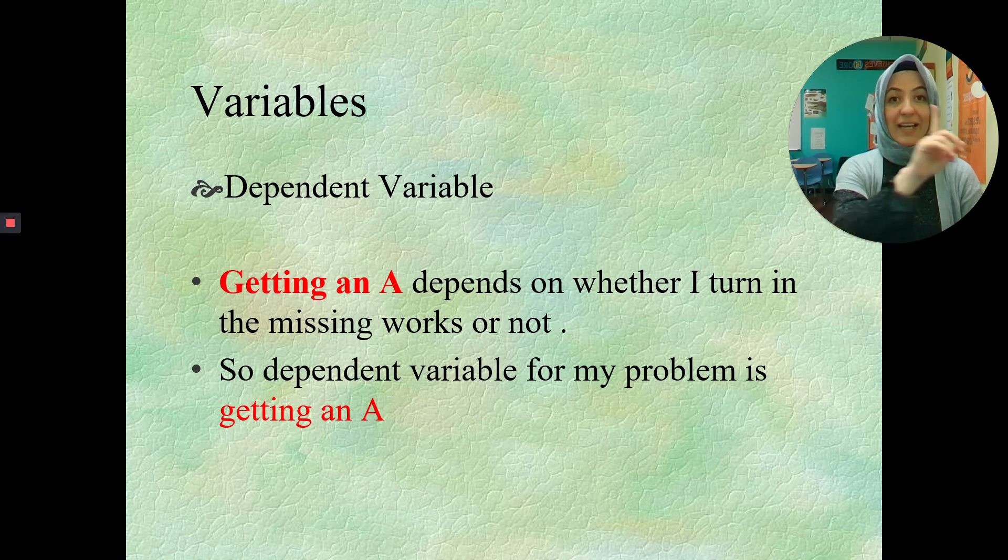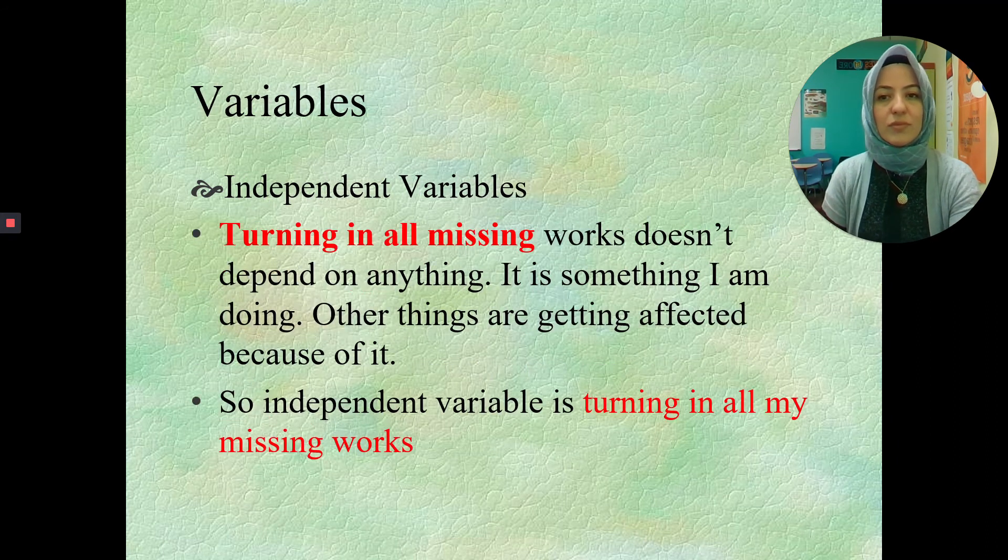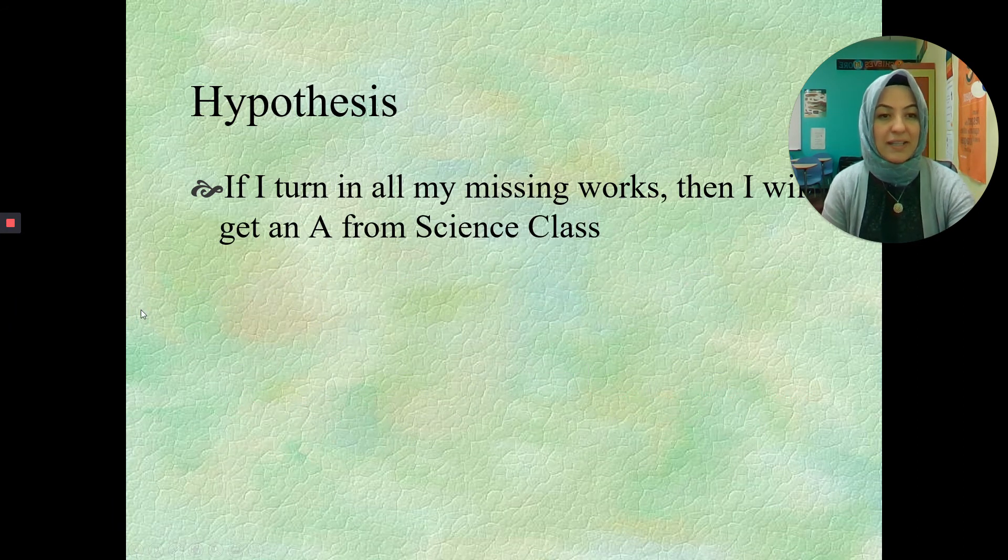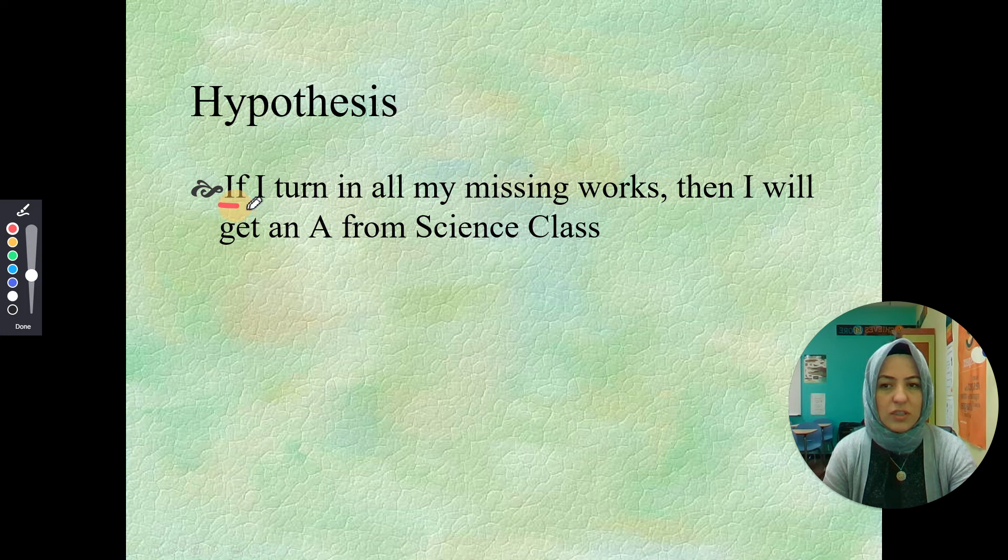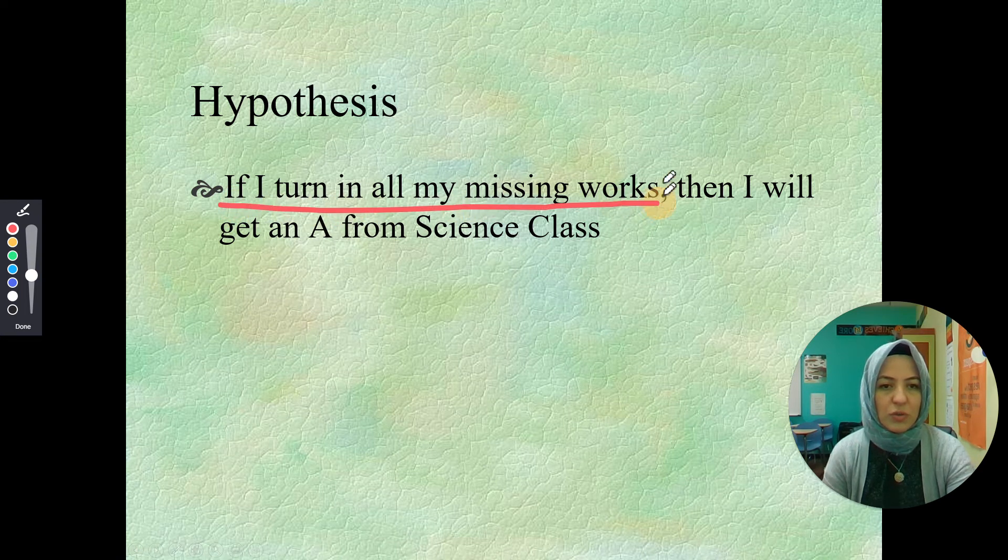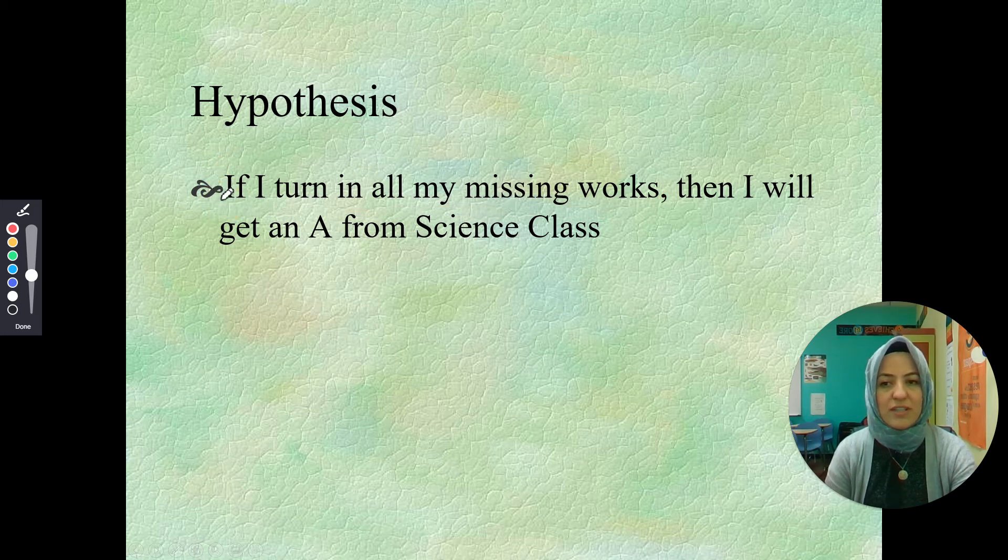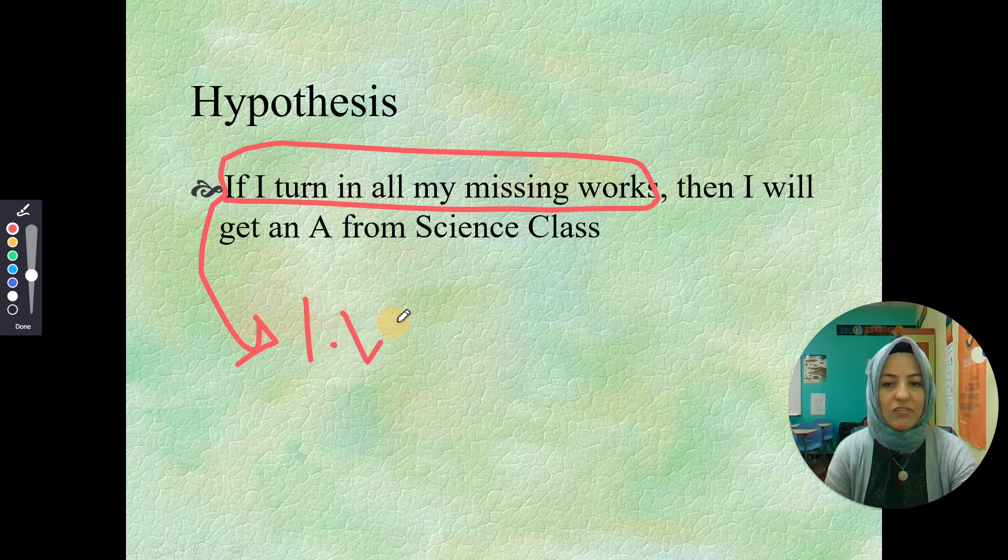Dependent is getting an A, and independent, turning in all my missing works. So I am going to go back to my hypothesis part. I will show you something that is really cool, which I already showed you before. Let's see if you guys remember or not. So I am going to underline the first sentence. If I am turning in all my missing works. This first sentence is usually independent variable. Oh, it's so cool. I don't have to worry about finding it out.